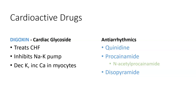Procainamide has a hepatic metabolite — N-acetylprocainamide. Some immunoassays test for both, and some don't. The N-acetylprocainamide also delivers antiarrhythmic activity, so you really need to be measuring both, not just one. It's important to have both values.